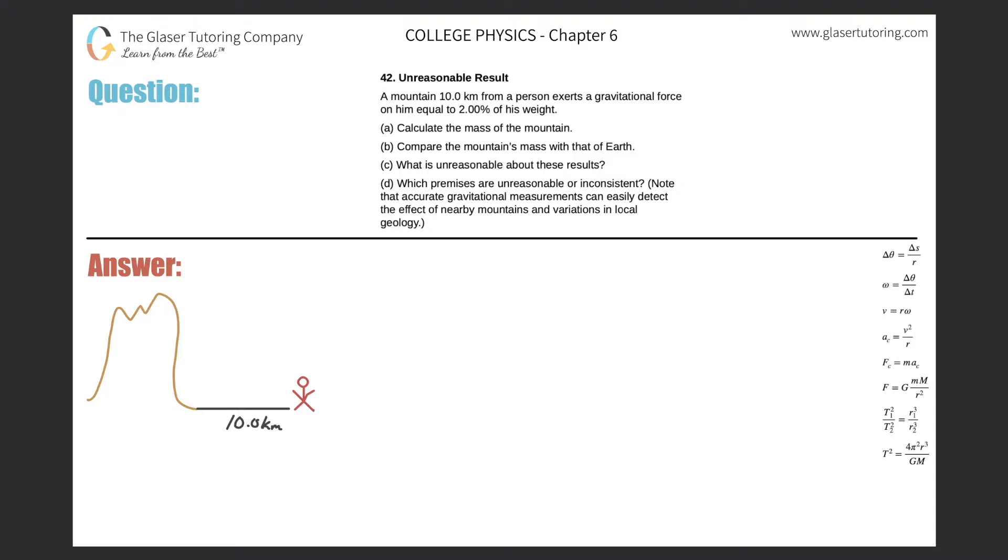Number 42, unreasonable result. A mountain 10 kilometers from a person exerts a gravitational force on him equal to 2% of his weight. Calculate the mass of the mountain. All right, so here we have a little picture. Got a mountain, got a person, got a distance, 10 kilometers away.